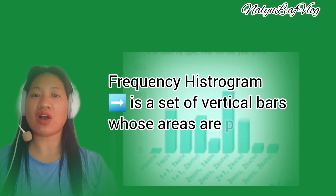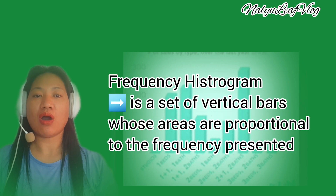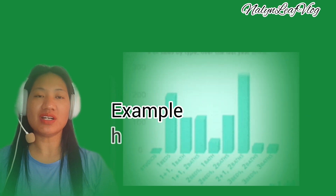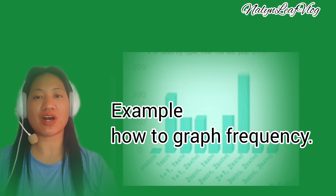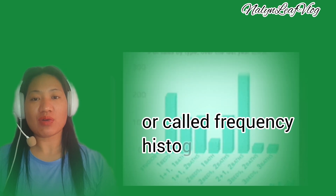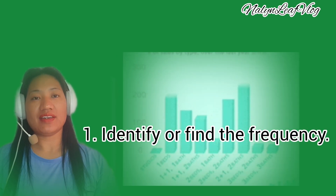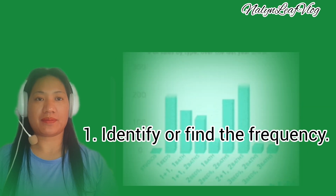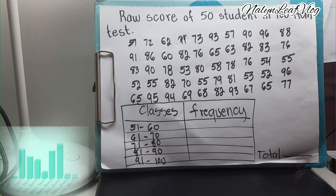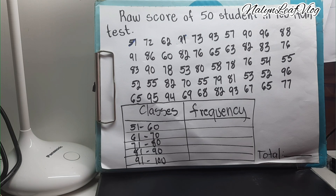Step five: the vertical axis height should be approximately three-fourths the length of the horizontal axis. The frequency histogram is a set of vertical bars whose areas are proportional to the frequencies presented. Here is an example of how to graph a frequency histogram: a raw score of 50 students on a 100-item test.